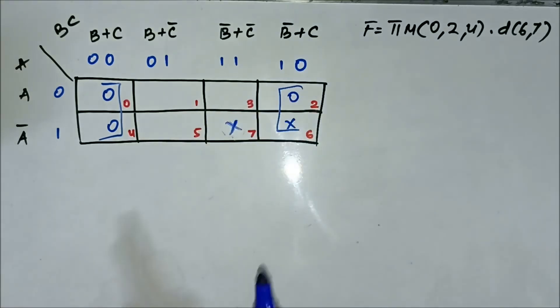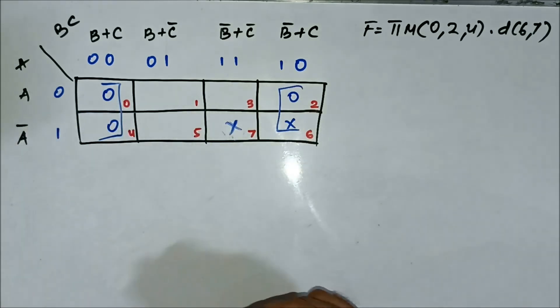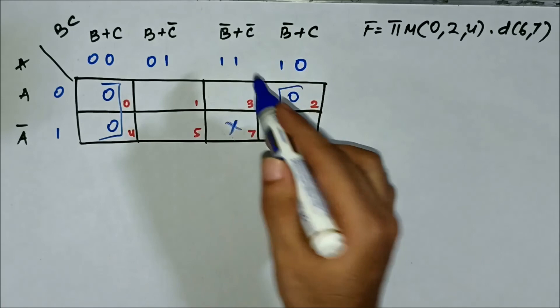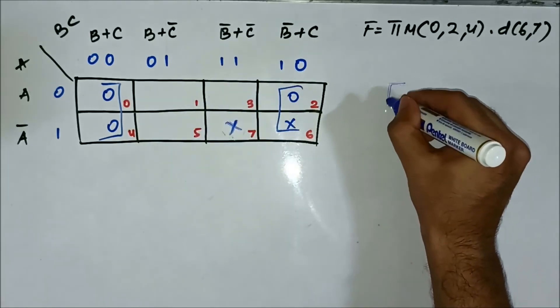Now we will identify the common terms. For this quad in the horizontal side there is nothing common, in the vertical side we have C common. So, this F is equal to C.